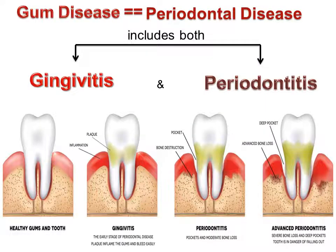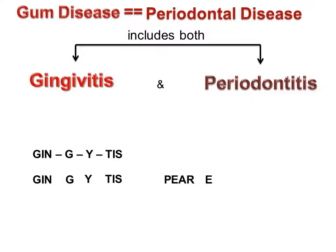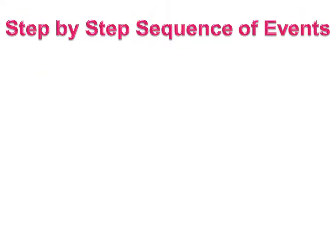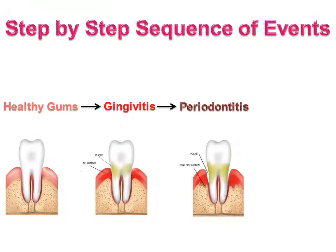Remember, gum disease or periodontal disease includes both gingivitis and periodontitis. Let's learn step by step the sequence of events that leads from normal gums to gingivitis, then to periodontitis, and finally tooth loss.